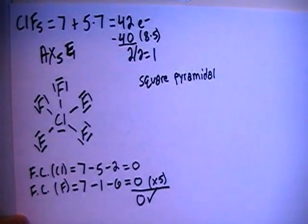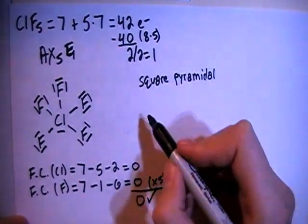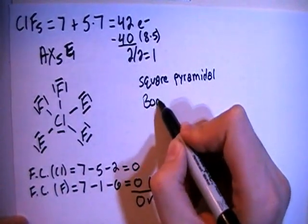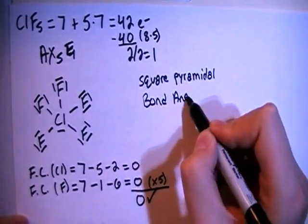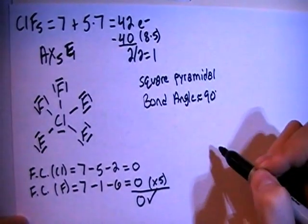So it's kind of like a pyramid that has a square base. All right, and when you have this type of shape, the bond angles are going to be approximately equal to 90 degrees.